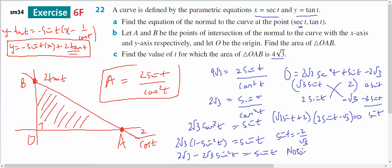There's no solution. Or sine of T equals root 3 on 2, which means T equals pi on 3. So T equals pi on 3 will give me an area of this triangle being 4 root 3.